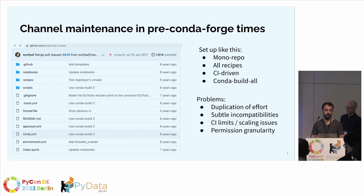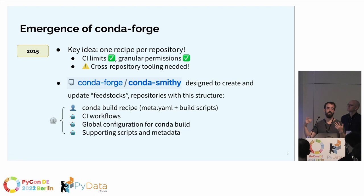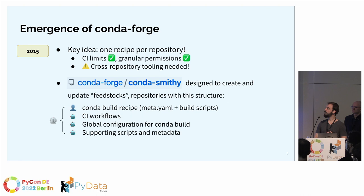The fix came at SciPy 2015, where a key idea emerged: instead of all recipes in one repository, split it — one recipe per repository. This worked around CI limits and enabled granular permissions per collaborator. The only problem was cross-tooling. That's when Conda Smithy was devised to generate unified configurations across several repositories. A Conda Smithy repository is called a feedstock, containing the Conda recipe, CI workflows, global configuration, and supporting scripts. This was the emergence of CondaForge in 2015.